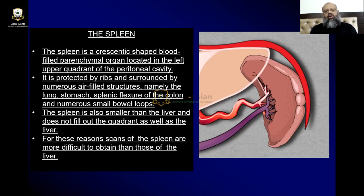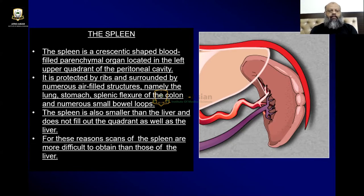The spleen is smaller than the liver and does not fill out the quadrant as well as the liver. For these reasons, scans of the spleen are more difficult to obtain than those of the liver. Since the liver fills the entire quadrant but the spleen does not, the remaining areas are filled by air-filled structures like the stomach, the splenic flexure of the colon, and small bowel loops.